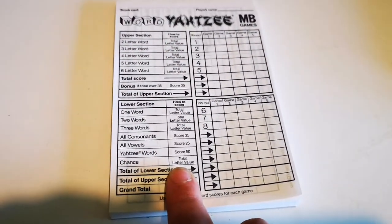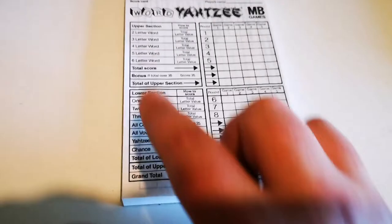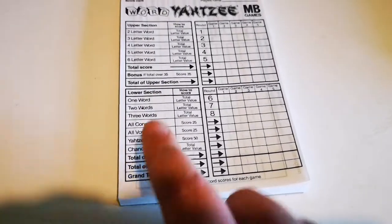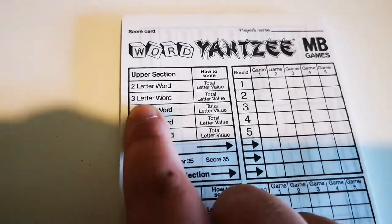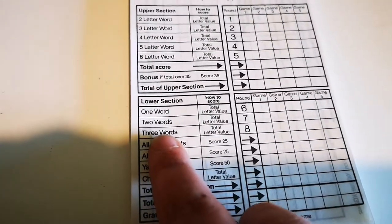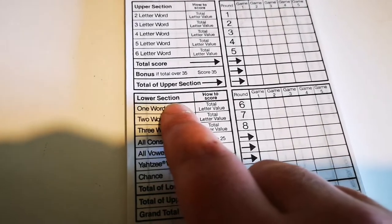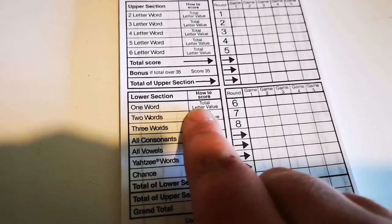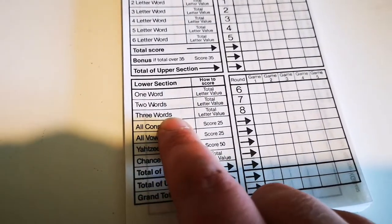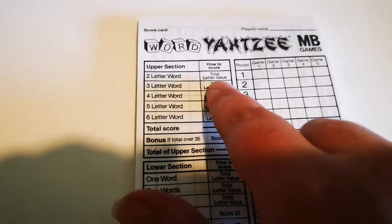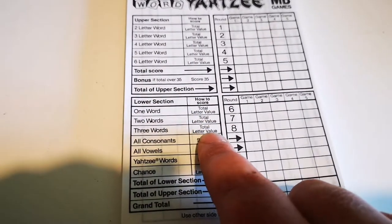And the lower section here, now you can fill both sections in at the same time. It doesn't have to be first all of these, then all of these, or the other way around. So say you make a one word, and then you've already filled in a three letter word, and you make another three letter one word. Again, you add the letter value, and then put it wherever you are. If you've made three words, again, the total letter value. So basically, most of these are just adding up the numbers on the letters.